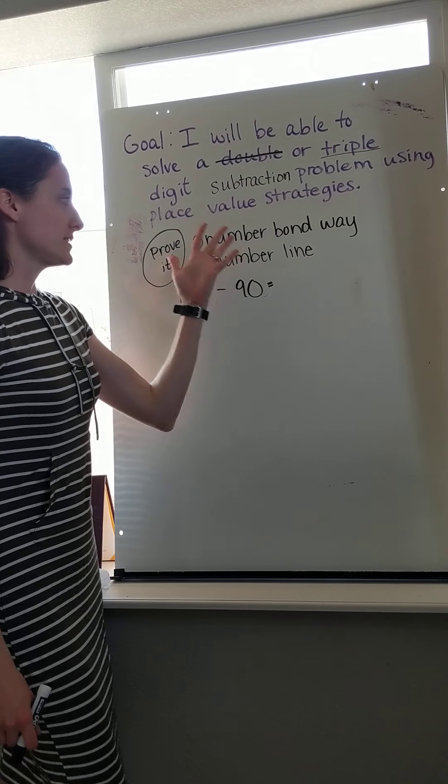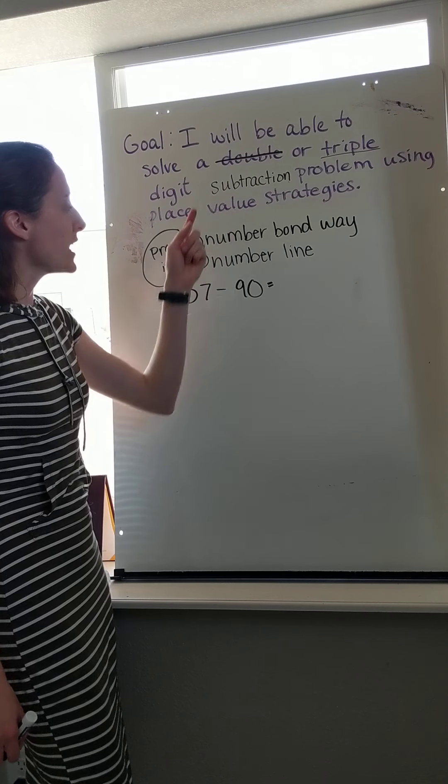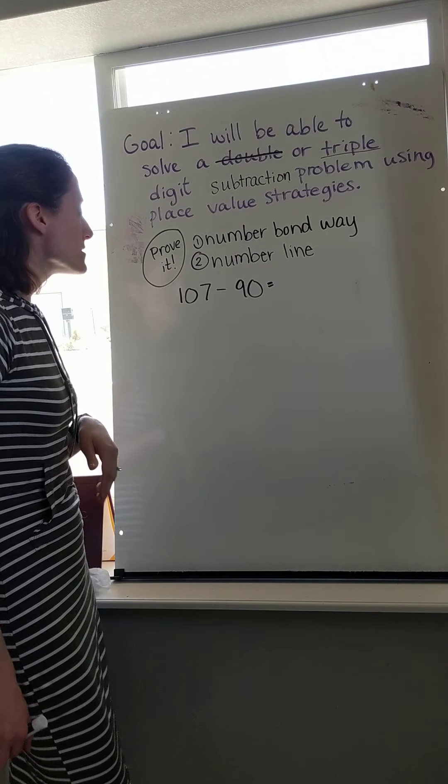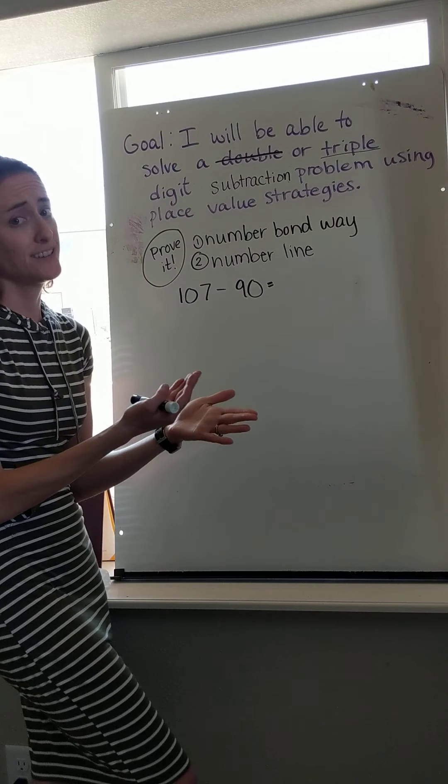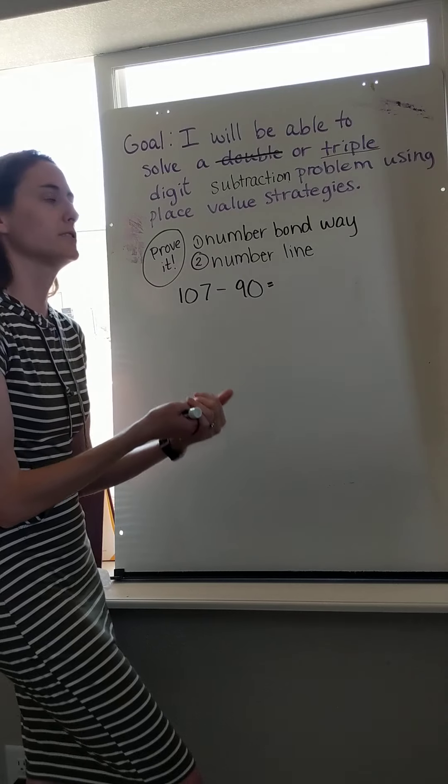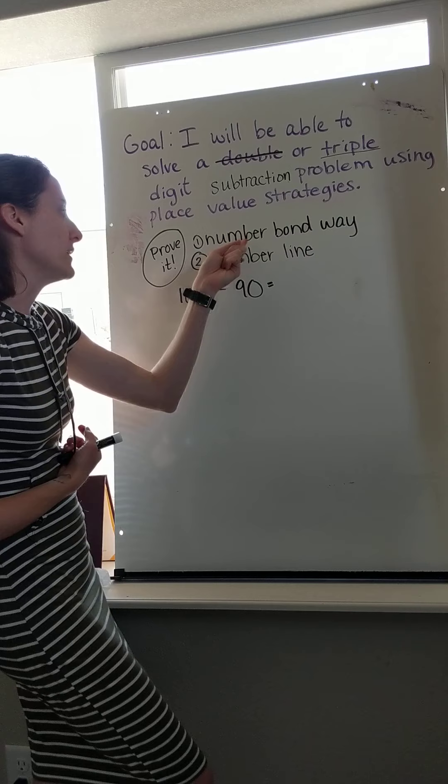Today we are using the same two strategies as we did yesterday, except we are doing subtraction. So we have a number bond way that we will try first. The reason that we do two strategies is so we can say, I definitely know this is the right answer. I definitely tried more than one way to get there so that I'm sure. So let's jump in.